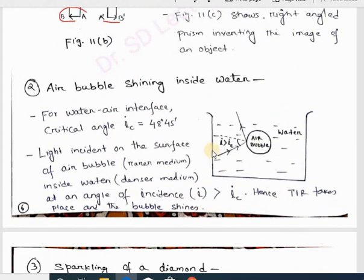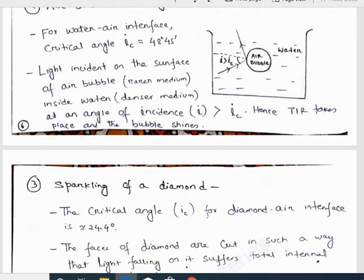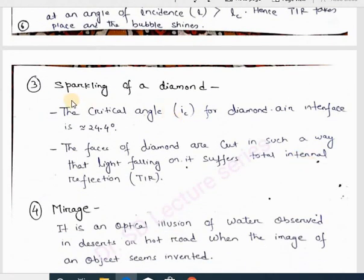Another application of total internal reflection is an air bubble shining inside water. An air bubble shines because the incident light striking the bubble surface exceeds the critical angle, and the light gets reflected back into the same medium — water. Inside the bubble is air, and outside is water, so light travels from the denser medium (water) to the rarer medium (air). Since it exceeds the critical angle, it reflects back into water and the bubble appears to shine.